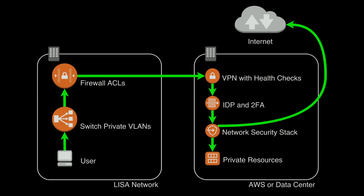The VPN also ties in with your identity provider to make sure you are an authorized employee and that you do that two-factor push on your phone or type in that six-digit code. From there the connection goes through your favorite network security stack — IPS, statistical analysis, malware analysis, whatever you prefer — then into your private resources and out to the Internet.